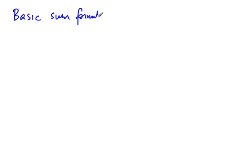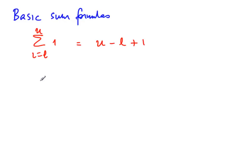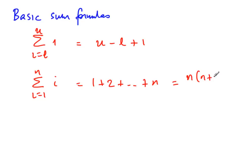Now let us look at some basic summations. The first is adding 1 from a lower bound l to an upper bound u, which equals u - l + 1. For instance, how many numbers lie between 3 and 13 inclusive? That is 13 - 3 + 1 = 11, so be careful about the plus 1. The other key summation is from i=1 to n of i — that is 1 + 2 + ... + n — which equals n(n+1)/2.